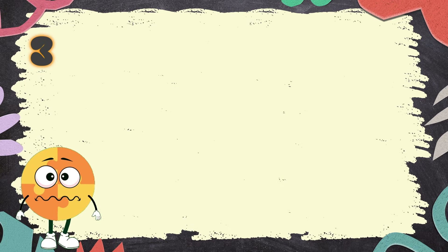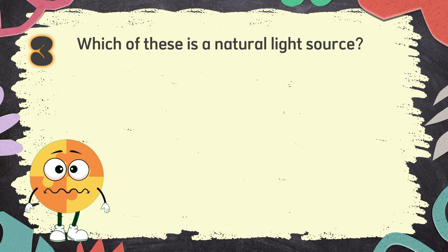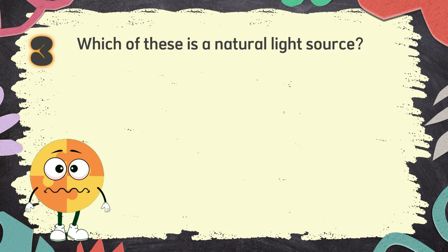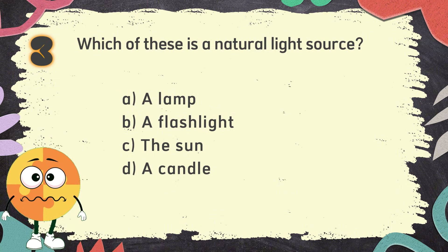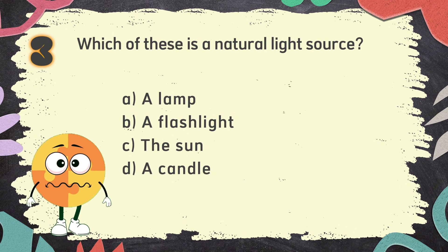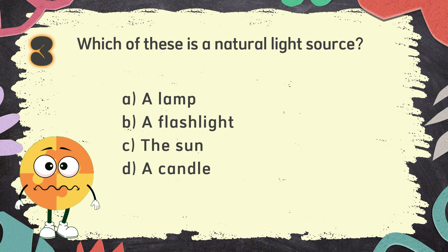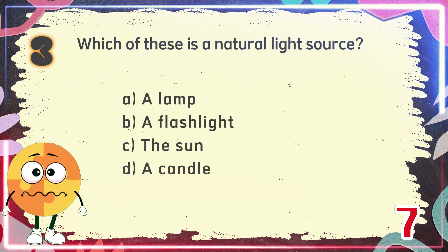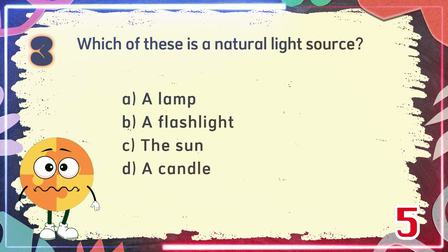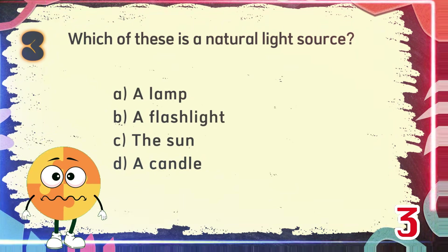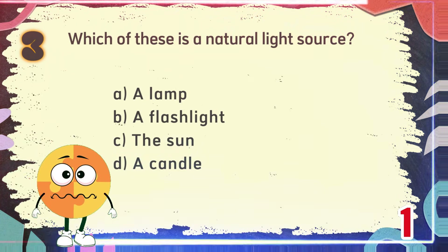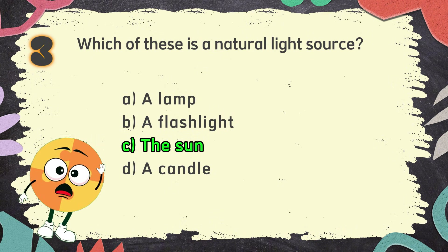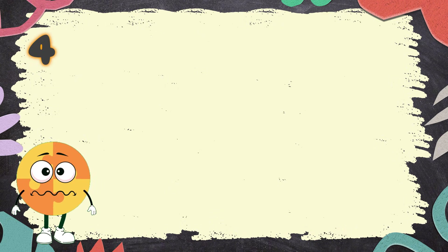Number 3. Which of these is a natural light source? The choices are: A. A lamp, B. A flashlight, C. The sun, D. A candle. The correct answer is C: The sun.